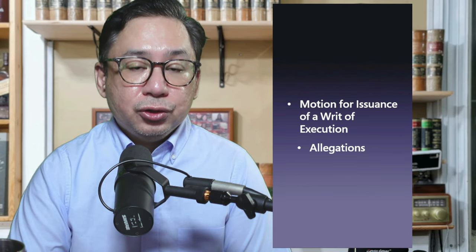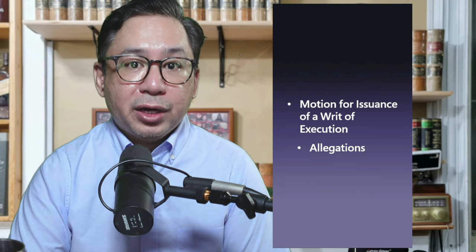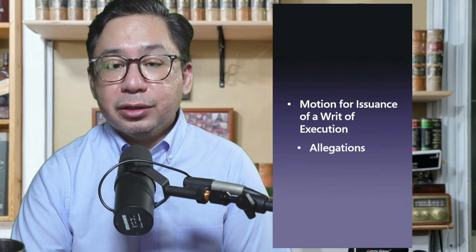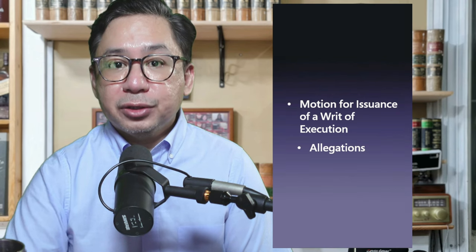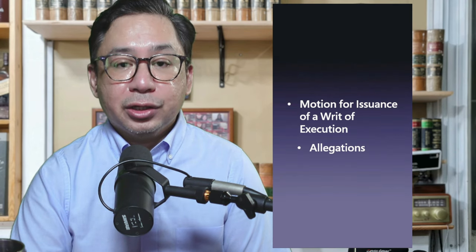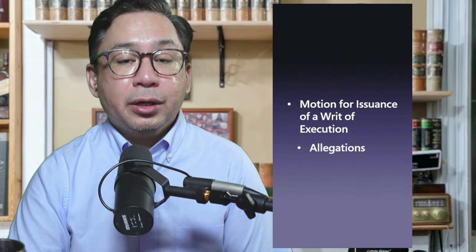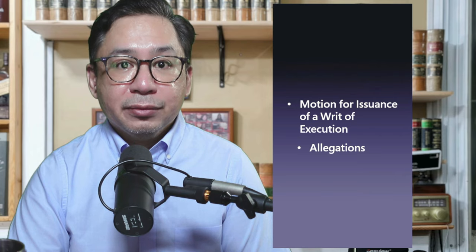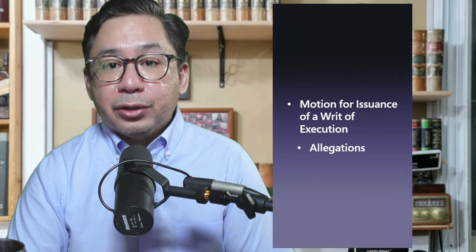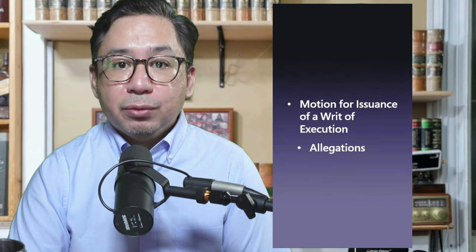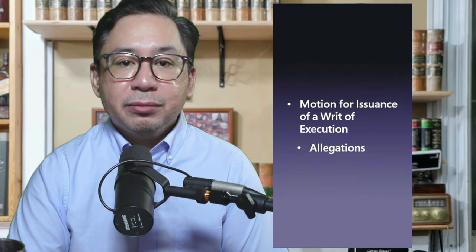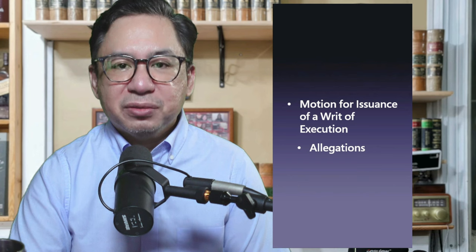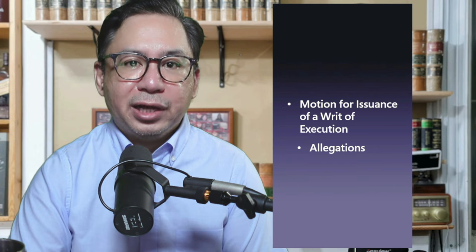The motion for execution should be filed within five years from the date the judgment becomes final and executory. Otherwise, the judgment will become dormant. What do you state in your motion? Essentially, the motion should at least contain the following allegations.